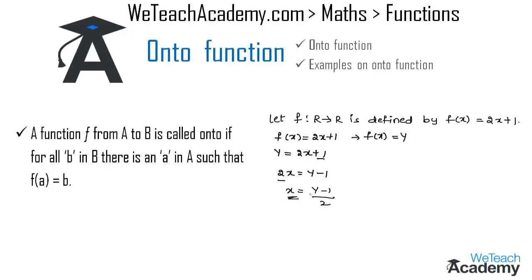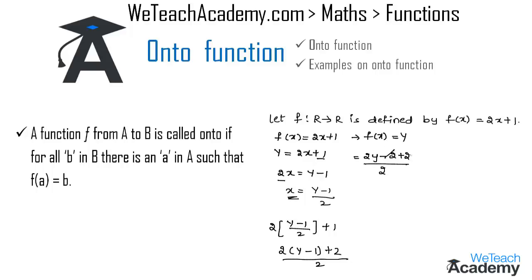Now let us replace the x value in f(x). We get f(x) equals 2 times (y minus 1)/2 plus 1. Taking LCM as 2, we get (2y minus 1 plus 2) divided by 2, which gives (2y minus 2 plus 2)/2. The minus 2 and plus 2 cancel, leaving 2y/2, which simplifies to y. Therefore f(x) equals y, and we conclude that f(x) is an onto function.